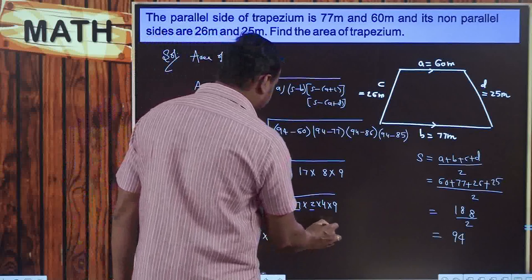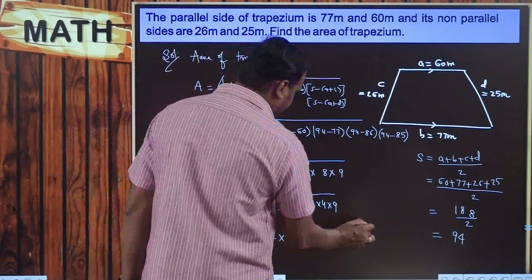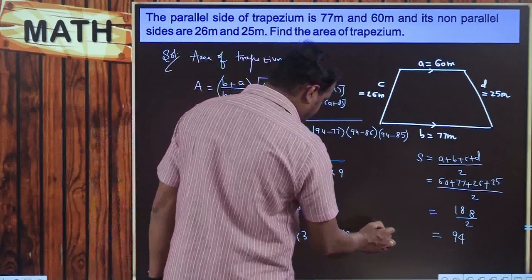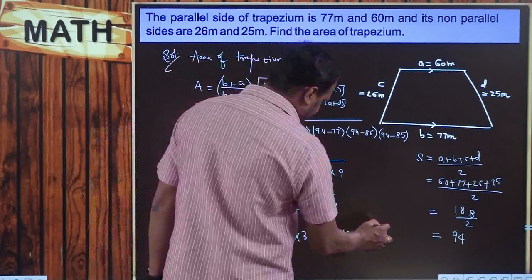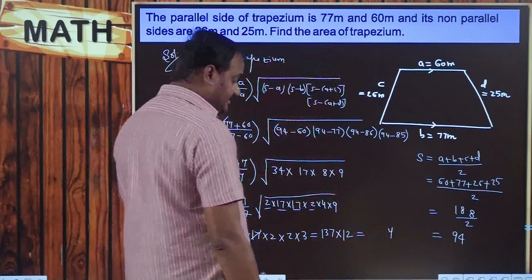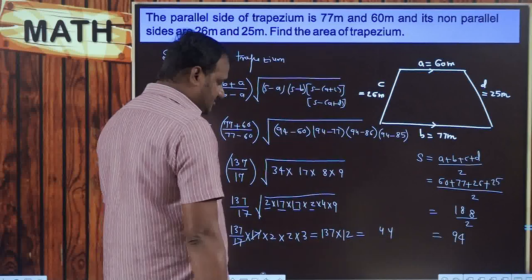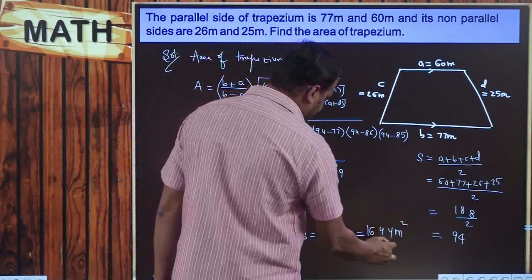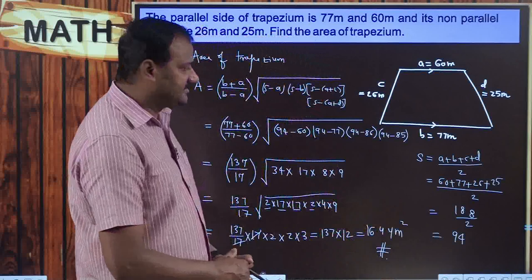Cancelling 17 and 17, we get 137 × 2 × 2 × 3 = 137 × 12. Calculating: 12 × 7 = 84 and 12 × 130 = 1560, giving 1644. So the area of the trapezium is 1644 square meters when all four sides are given.